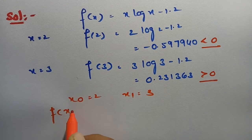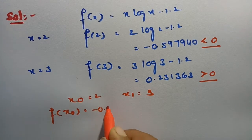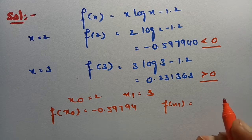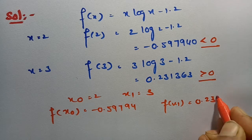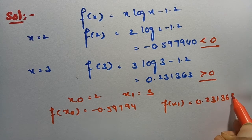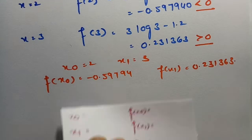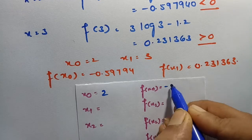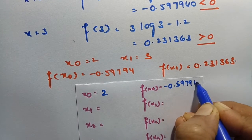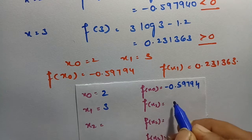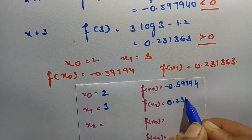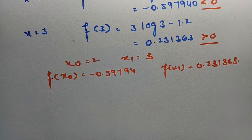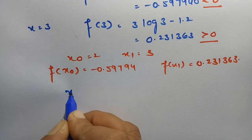So x₀ = 2 and x₁ = 3. It is known that f(x₀) = −0.59794 and f(x₁) = 0.231363. Writing these values down: x₀ = 2, f(x₀) = −0.59794, x₁ = 3, f(x₁) = 0.231363. Now we have to go with x₂.